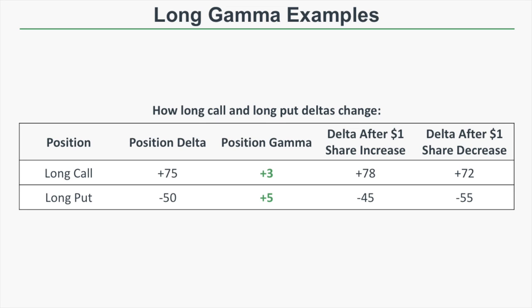For example, with a long call: for the first one-dollar increase in the stock price, that long call is expected to yield a profit of plus 75 dollars. After that one-dollar increase, the new delta will be plus 78, meaning the next dollar move is expected to yield a profit of 78 dollars. Positive gamma tells us that if you own a call option and the stock price continues to increase, your profits are going to grow as the position delta increases.